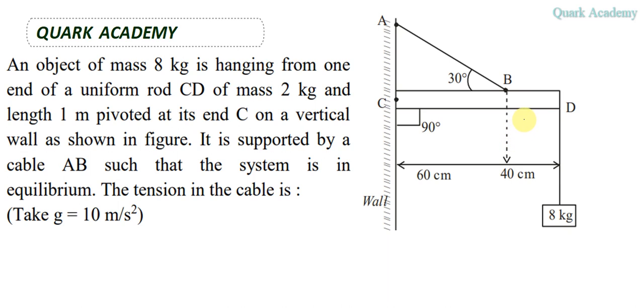In this problem we have a rod of mass 2 kg, and one end of the rod is pivoted, like it is attached to the wall at point C. Another end has a mass of 8 kg which is hanging, and we have a cable AB which is connected with the wall and the rod. The distance between the point at which the cable is connected to the rod and the wall is 60 centimeters.